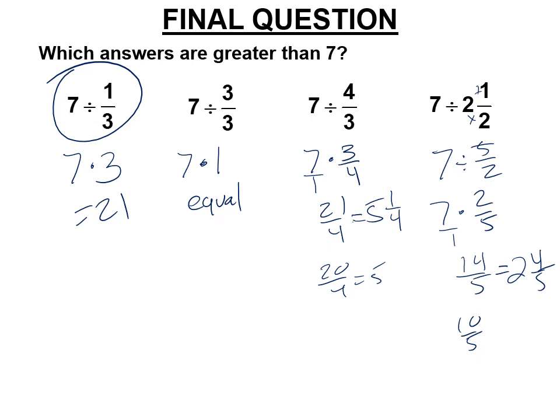And that's because 1 third is the only number less than 1. If you divide by 1, you get the same number. You get something equal. If you divide by something greater than 1, it doesn't matter. You're going to get less than what you started with. Because 1 and 1 third, 4 thirds, is only going to go into 7, 5 and 1 fourth times. 2 and 1 half is only going to go into 7, 2 and 4 fifths times. Less than 7. But 1 third is small. It's less than 1. It goes in 21 times. Good luck on the test. Do your homework first.